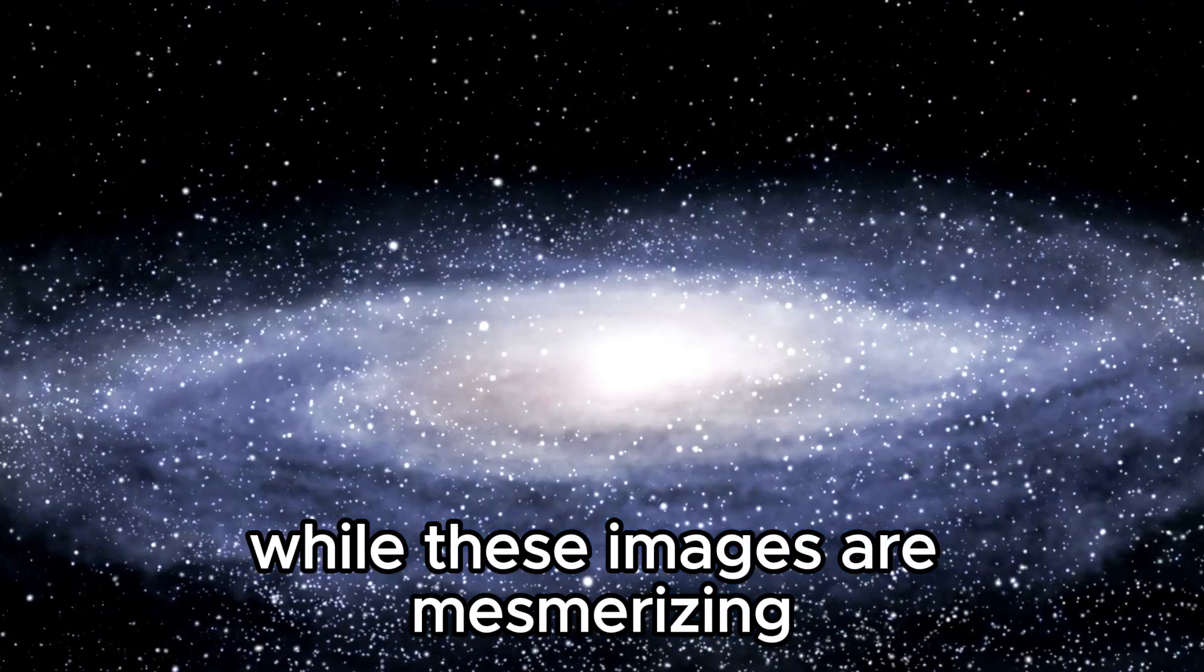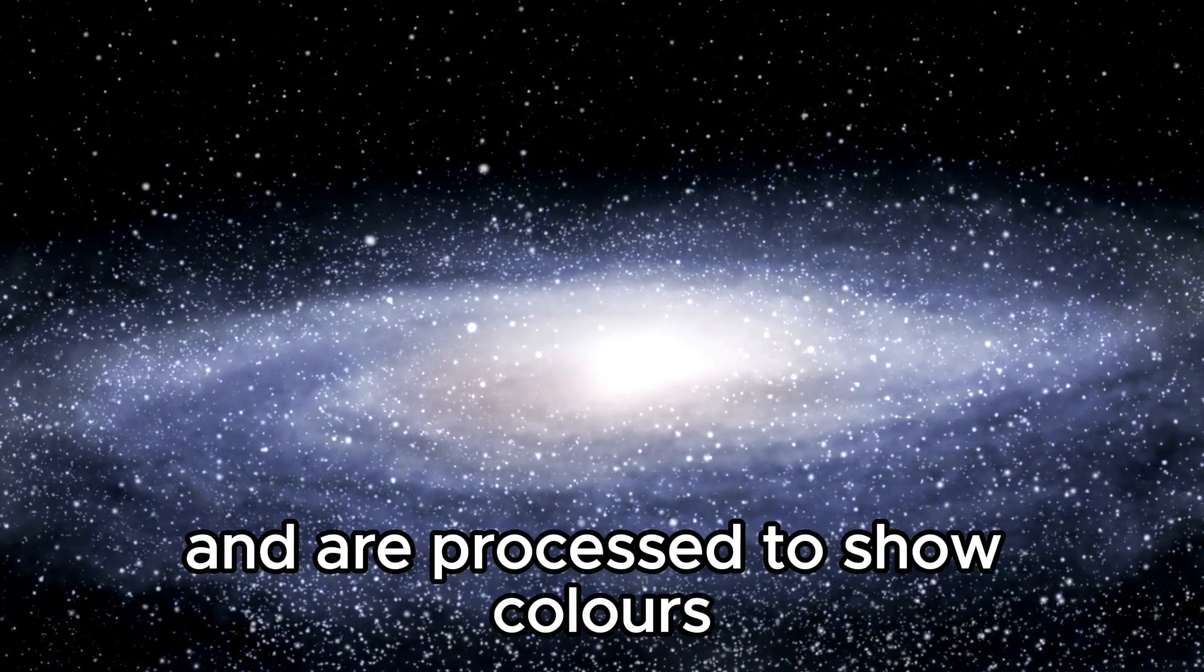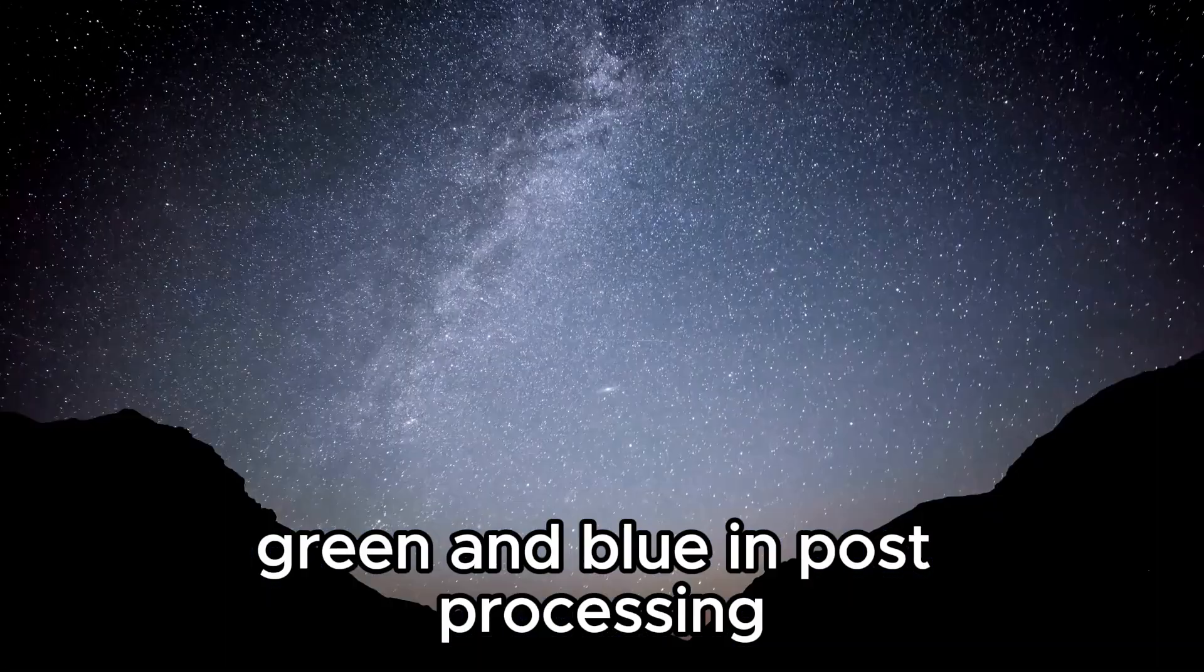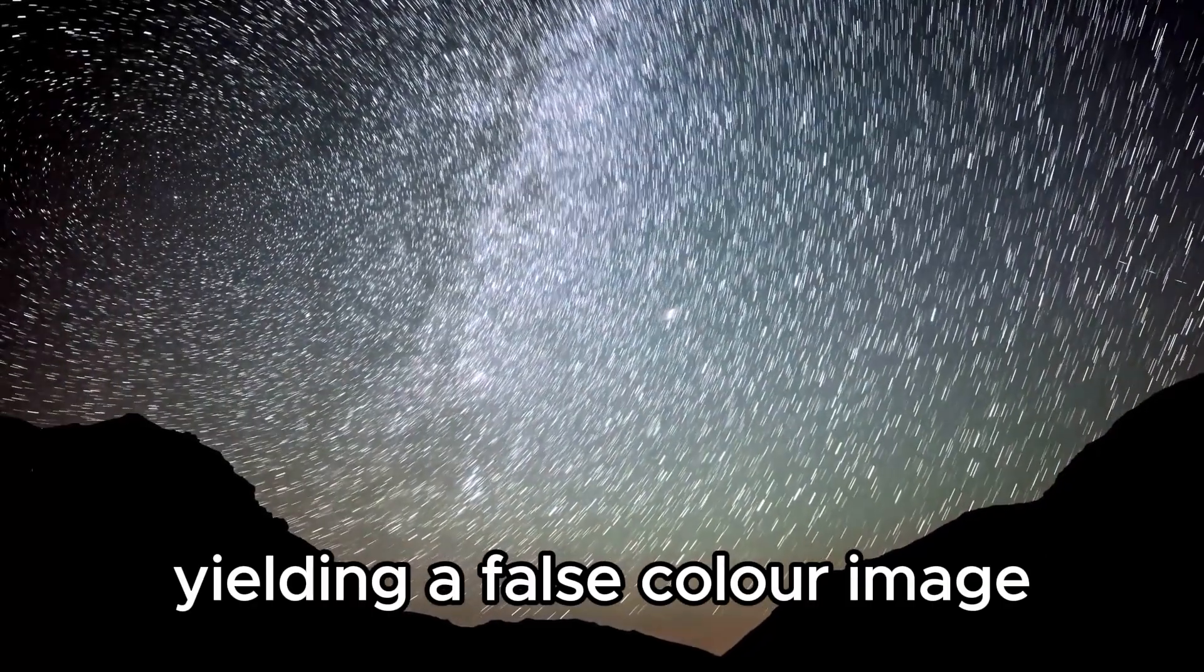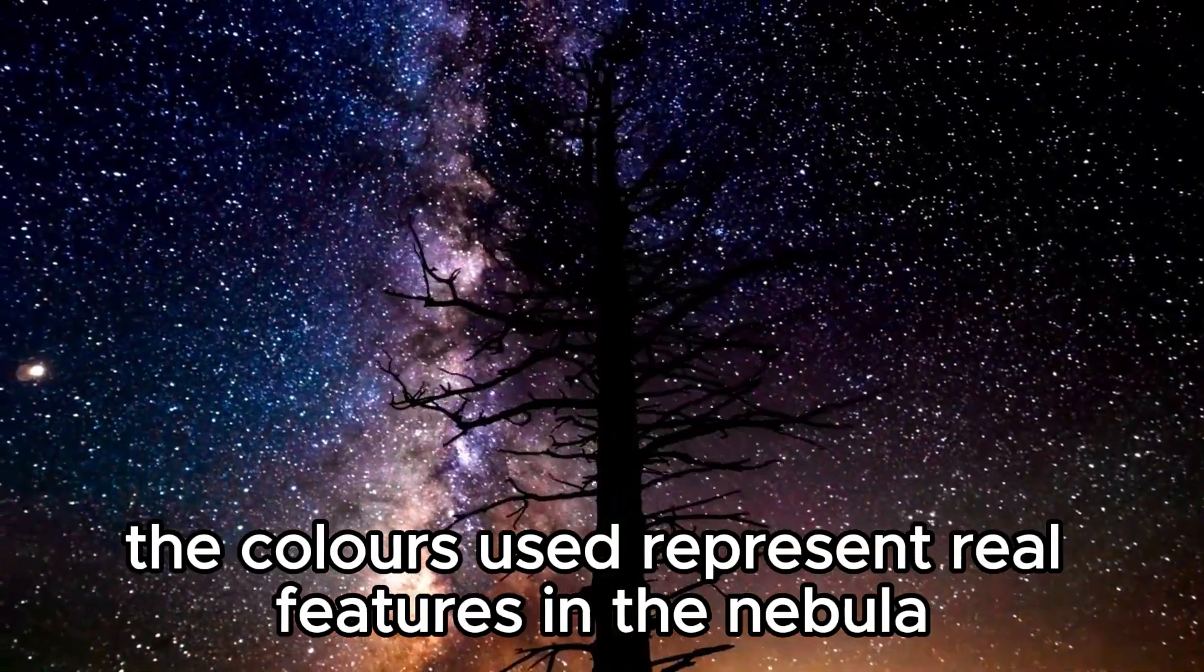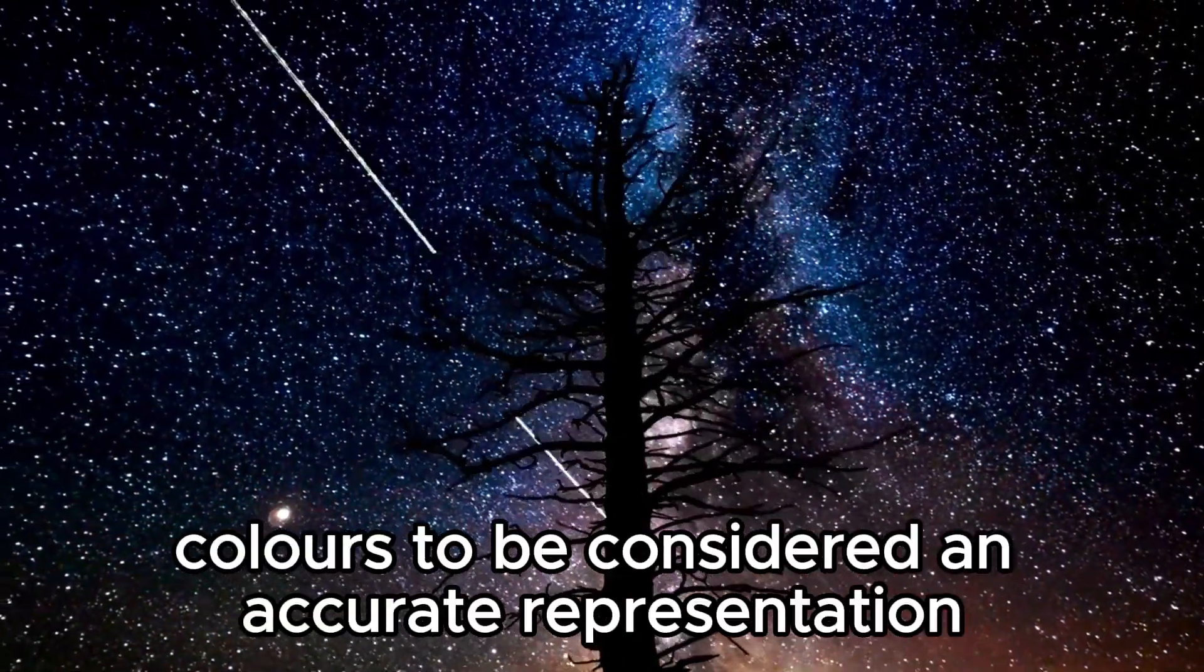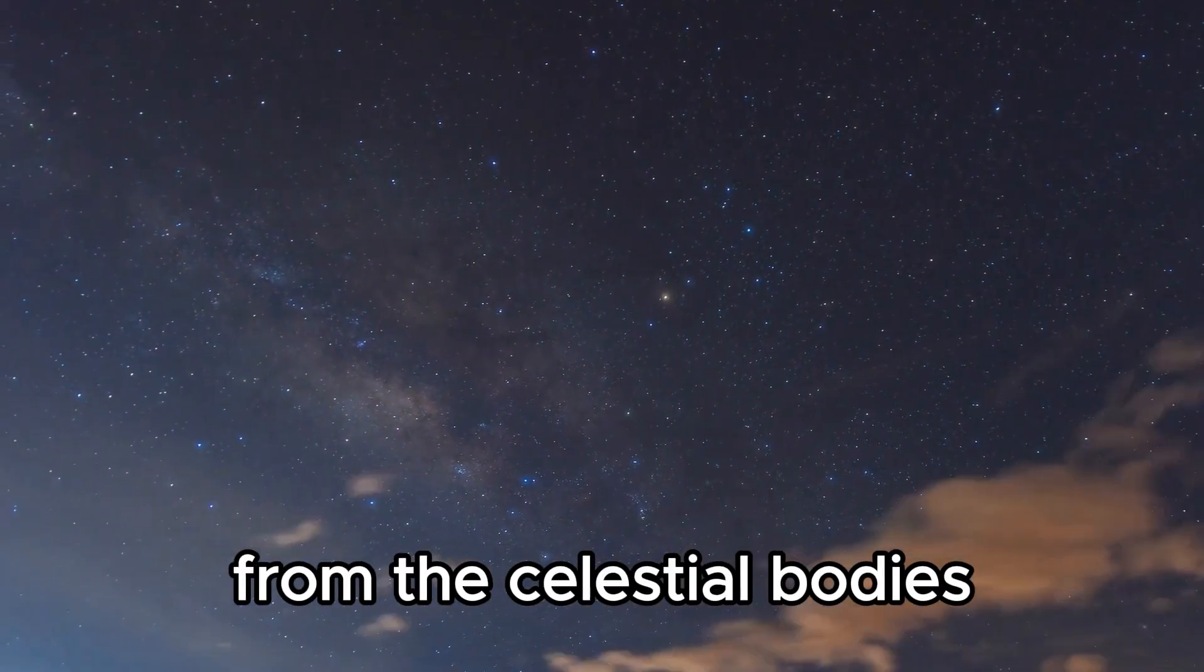While these images are mesmerizing, they are monochromatic and are processed to show colors. The monochromatic images are converted into red, green, and blue in post-processing, yielding a false color image. However, the colors used represent real features in the nebula, such as star formation regions or dust clouds, allowing the colors to be considered an accurate representation of the gases being emitted from the celestial bodies.